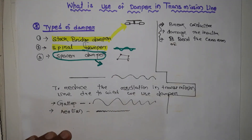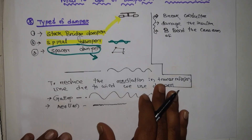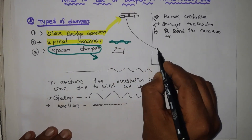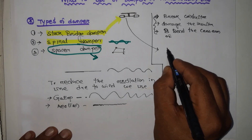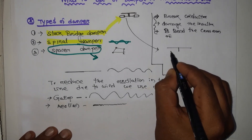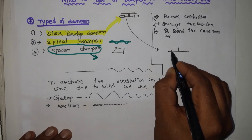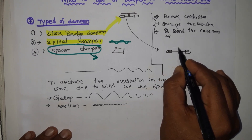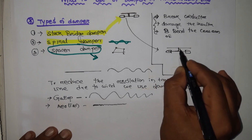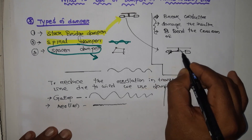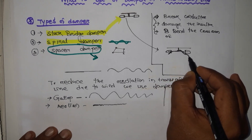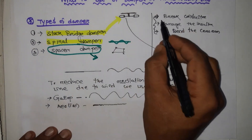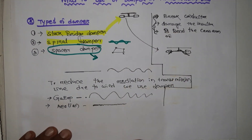What happens in the Stockbridge damper is that there are two weights provided on two sides. When oscillation occurs, these two weights eliminate or minimize the oscillation. Due to this minimization of oscillation, these three major types of damage are controlled.